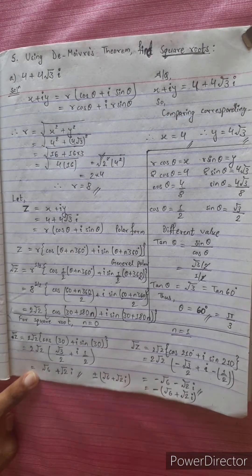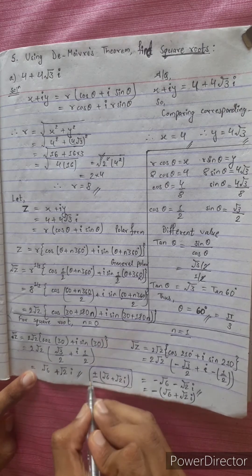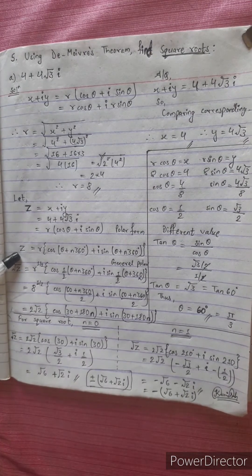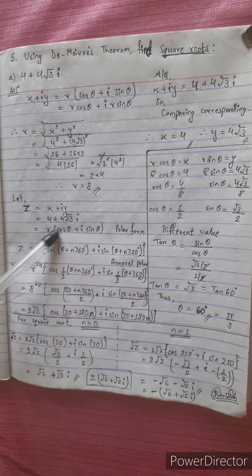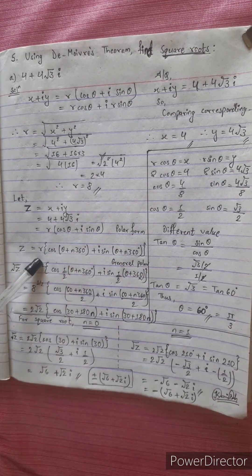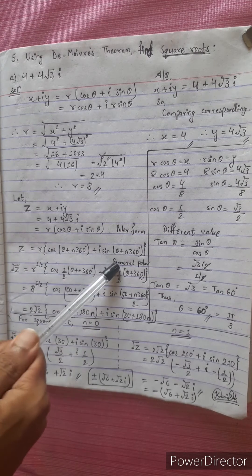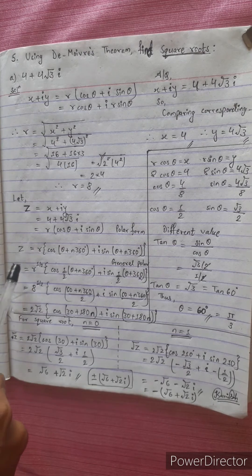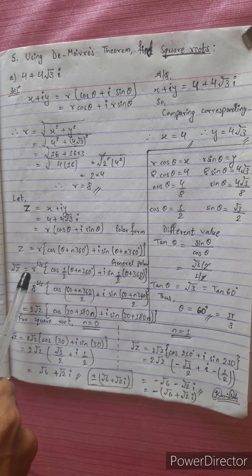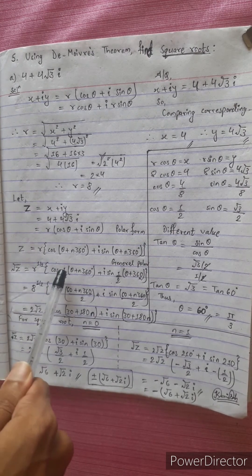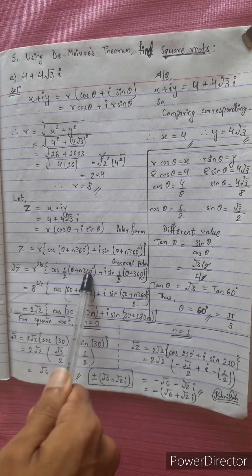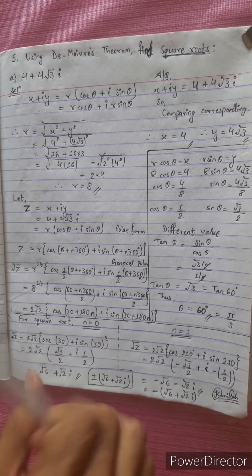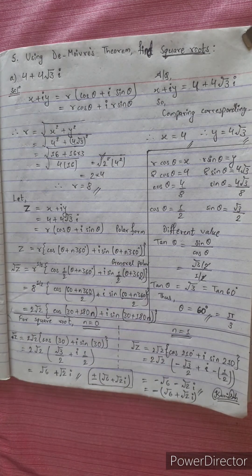This is the answer. There is no confusion here. Z in polar form is r cos theta plus i sin theta. This is the general polar form. The square root gives power 1 by 2, applied twice for the two roots.